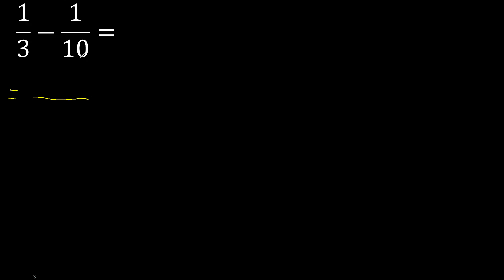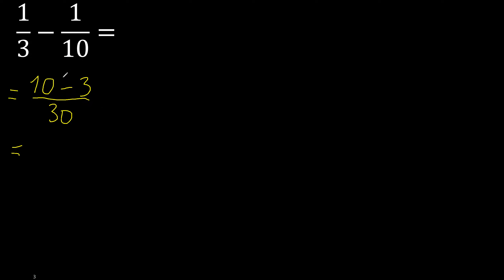First, multiply like this. 10 multiplied by 1 is 10, minus 3 multiplied by 1 is 3. Here 3 multiplied by 10 is 30. 7 over 30. Finish it because it cannot be simplified.